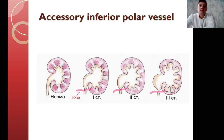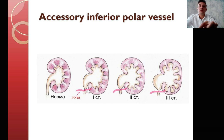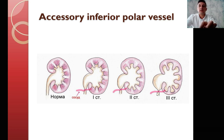We have three stages of primary hydronephrosis. As you can see, the normal kidney has a normal pelvis and calyxes. The vessel which crosses the ureter can make stenosis of the ureter at the pelvic-ureteral segment and cause pyelectasia and calicoectasia, with decreasing of the parenchymal tissue amount.